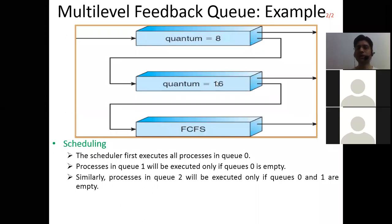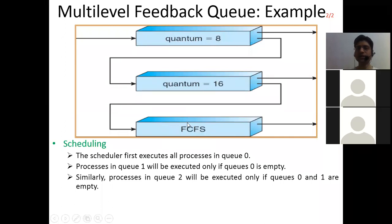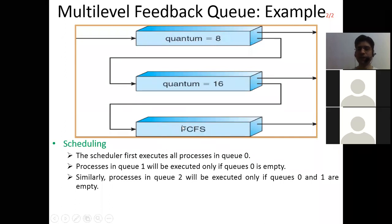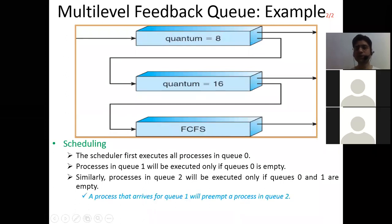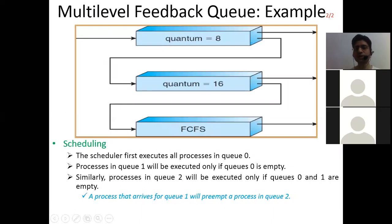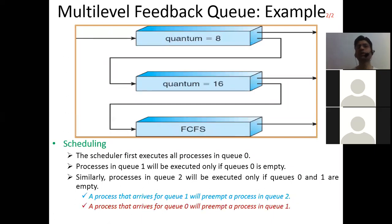Similarly, process in Queue 2 will be executed only if Queue 0 and Queue 1 are empty. Highest priority is given to Queue 0, then Queue 1. Queue 0 has to be empty, Queue 1 has to be empty — only then is there a chance for Queue 2. A process that arrives for Queue 1 will preempt a process in Queue 2, and a process that arrives for Queue 0 will preempt a process in Queue 1.